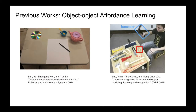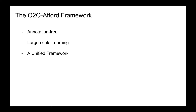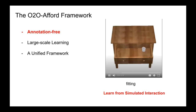Very few past works have studied the object-to-object affordance learning problem, and they are mostly studied on small-scale data, requiring human annotations or demonstrations for learning. Our O2O Afford system has many advantages. Firstly, it doesn't need any human demonstration or annotation of the affordance information. Instead, we learn from running several interaction trials in a physical simulator.